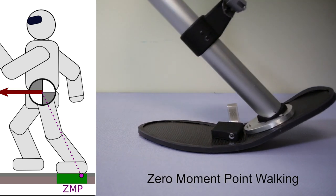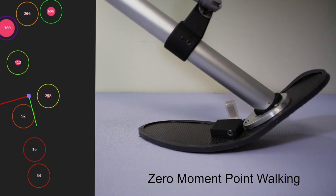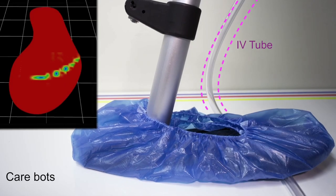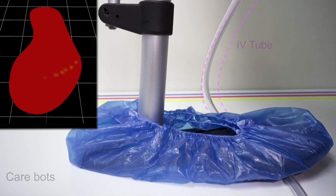Sensor soles provide data for zero-moment point walking, always falling forward like we humans walk. Carebots moving through human hospitals will sense safety issues, such as IV tubes under their feet.